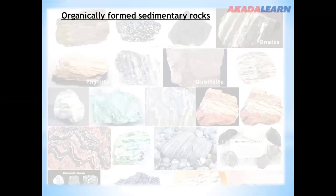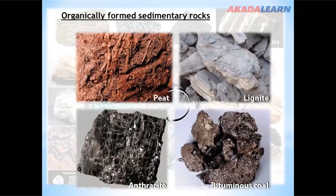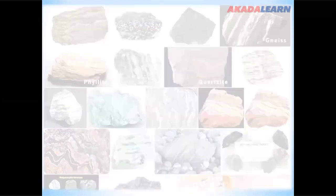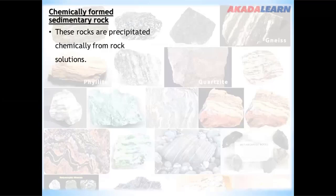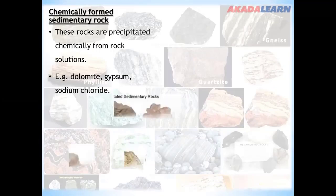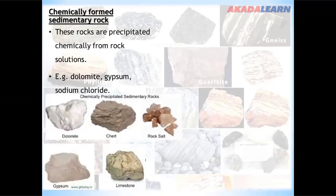Examples of organically formed sedimentary rocks include peat, lignite, bituminous coal, and anthracite. Chemically formed sedimentary rocks are precipitated chemically from rock solutions. Examples include dolomite, gypsum, and sodium chloride — also known as rock salt.